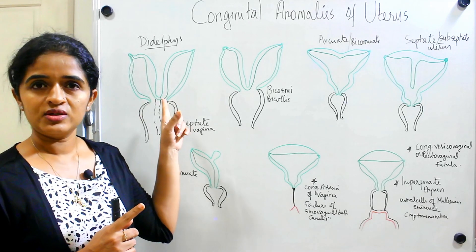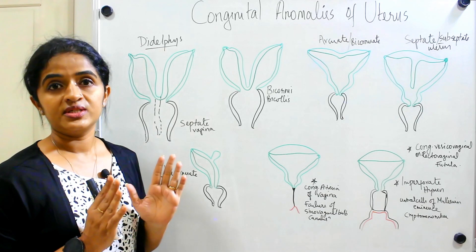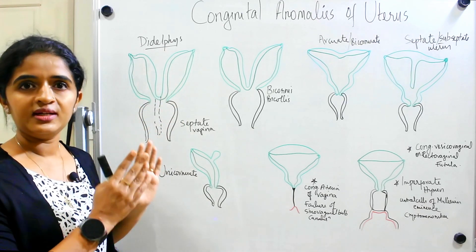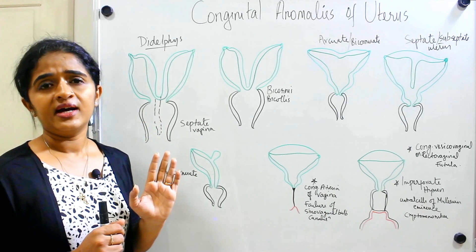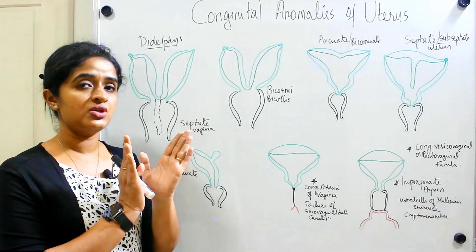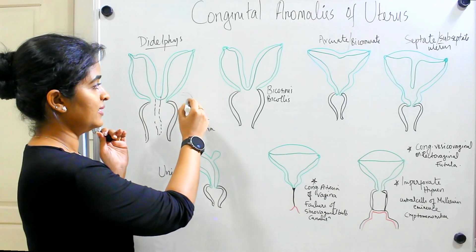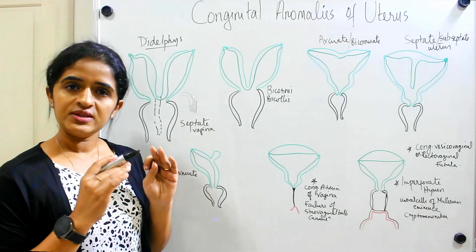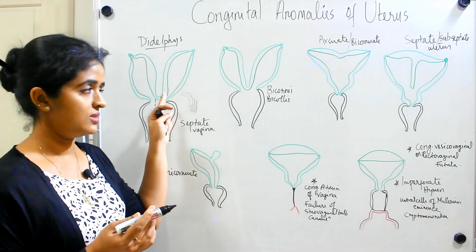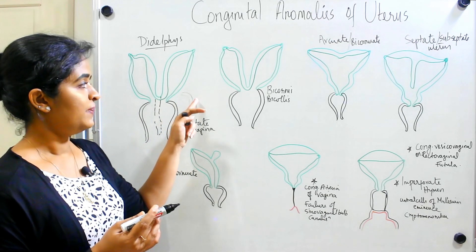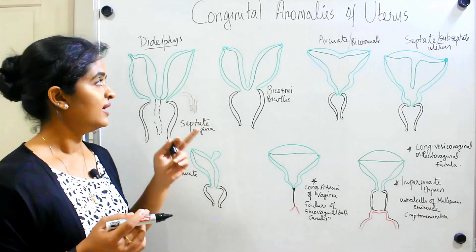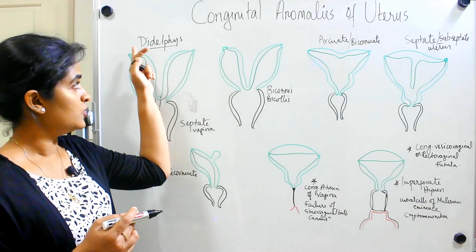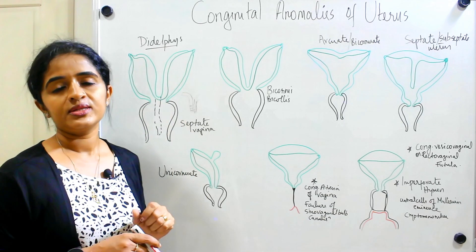The first condition is known as uterus didelphus. Here we can see that the uterus, the cervix, and the vagina are actually two separate canals. We know the uterus as well as the upper four-fifths of the vagina are developed from the fused portion of the paramesonephric duct. If they are not fusing, each paramesonephric duct will develop as a single cavity, and that is how you get two uteri, two cervical canals, and two vaginal canals, with only one uterine tube opening into each — that is uterus didelphus.